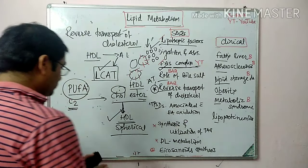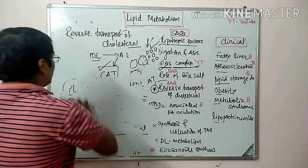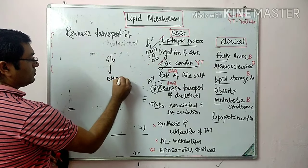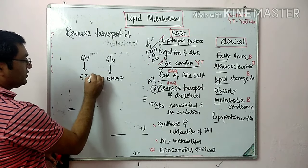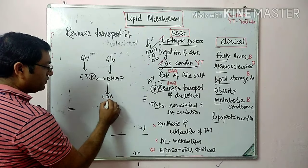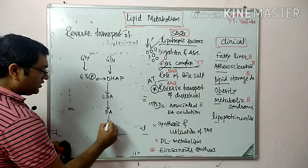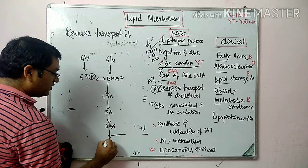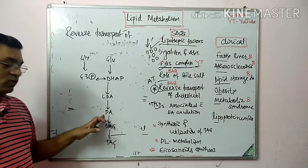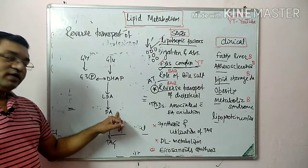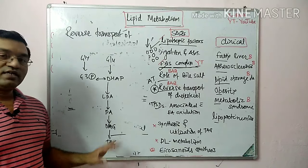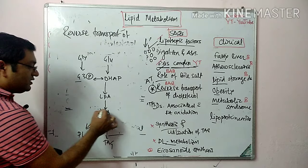DHAP and glycerol-3-phosphate are discussed in the synthesis of phospholipids and TAG. Through glucose there is formation of DHAP, and through glycerol there is formation of glycerol-3-phosphate; these are interconvertible. DHAP is converted into lysophosphatidic acid, which is converted into phosphatidic acid, then into diacylglycerol (DAG) with two fatty acids, and into triacylglycerol (TAG) with three fatty acids. Phosphatidic acid is a precursor for phospholipids.